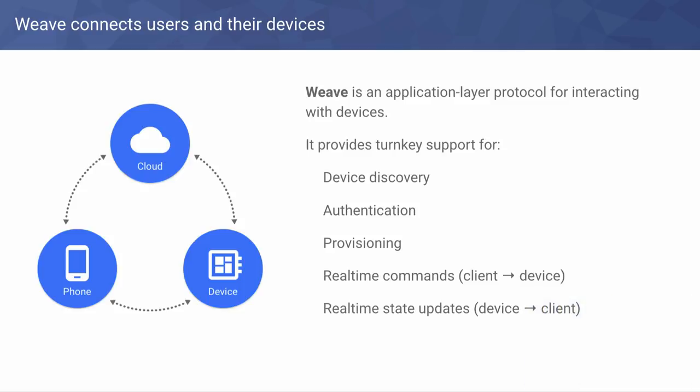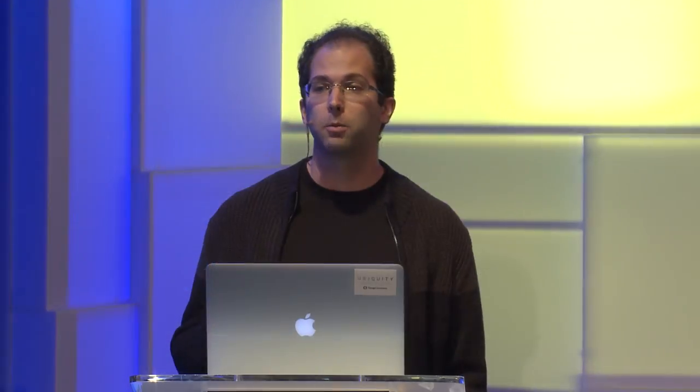The best way to think of Weave is as an application layer protocol that includes a number of pieces integral to building a connected device experience. These include turnkey support for device discovery over different transports, authentication against devices, and authorization for who or what has access to those devices. It includes provisioning — the ability to get a device set up out of the box and go from unboxed to ready to use as quickly and easily as possible. It also includes real-time communication in both directions, so if a client or service wants to tell a device to do something now, the device knows as quickly as possible. And likewise, if the device's state updates — temperature changed, now broken — it can notify subscribed applications and services quickly.